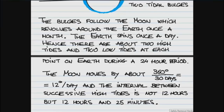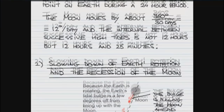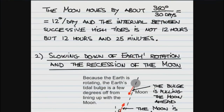So if there was a high tide at 10 o'clock in the morning somewhere, say in Halifax, then the next high tide would not be at 10 in the evening but at 10:25. One effect of this tidal interaction between the Earth and the Moon is the slowing down of the Earth's rotation and the recession of the Moon.